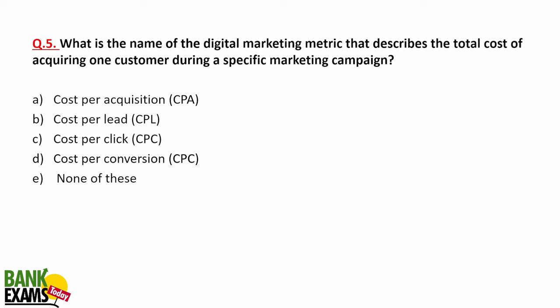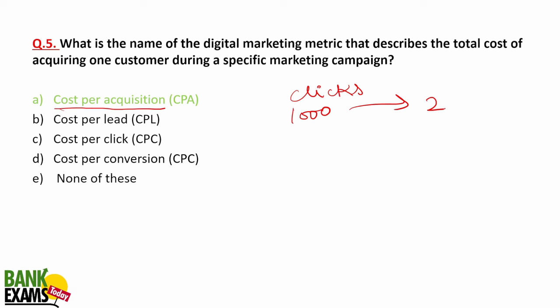MCQ: What is the digital marketing metric that describes the total cost of acquiring one customer during a specific marketing campaign? That is cost per acquisition (CPA). For example, if I run a campaign on Google and get 1,000 clicks, paying 10 rupees per click = 10,000 rupees spent, and only 2 students purchase the course, then cost per acquisition = 10,000 divided by 2 = 5,000 rupees.